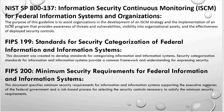FIPS 199 — Federal Information Processing Standard 199 — is the Standard for Security Categorization of Federal Information and Information Systems. This publication contains the standard definitions of confidentiality, integrity, and availability, as well as the standard definitions of potential impact levels: low, moderate, and high. These definitions guide you during categorization.